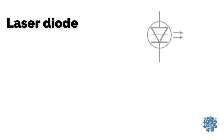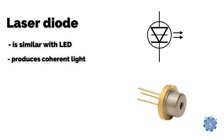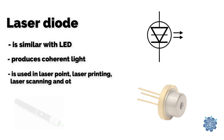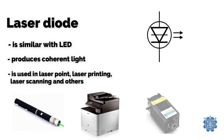Laser diode is similar to LED but has a different structure and produces coherent light. It is used in laser pointers, laser printing, scanning and others.